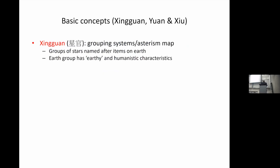Xingguan essentially means constellation or a group of stars. Instead of giving constellations fancy Greek names, the Chinese named their xingguans after more earthy characters — certain animals or rankings in government offices. By the third century, there were already 283 xingguans or constellations, as well as more than 1,400 stars recorded in the Chinese literature.